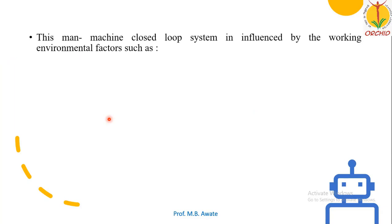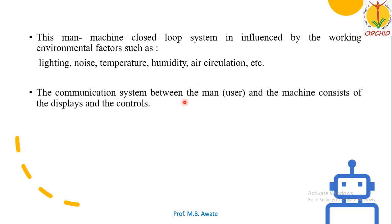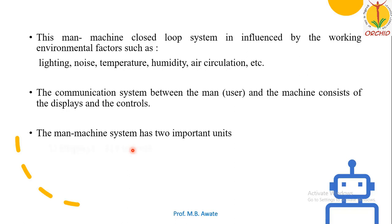The man-machine system is a closed-loop system influenced by working environment factors such as lighting, noise, temperature, humidity, air circulation, etc. The communication between the user and the machine consists of two very important parameters: displays and controls. From the display we receive information, and from controls we can take corrective action. So the man-machine system has two important units: displays and controls.